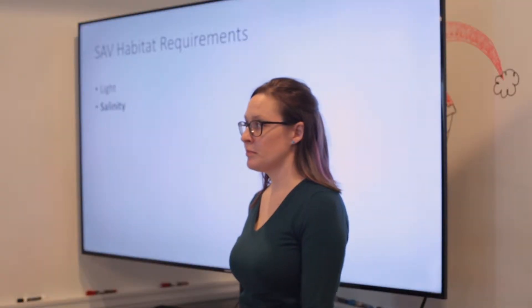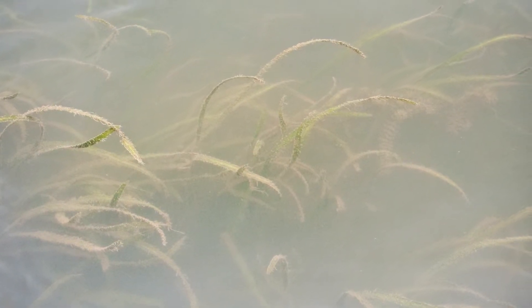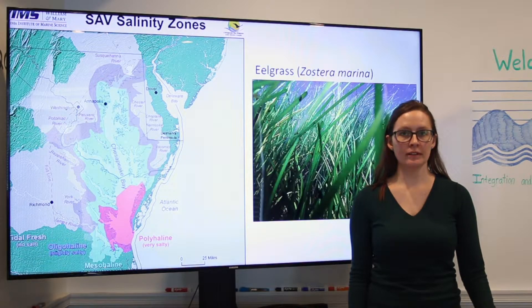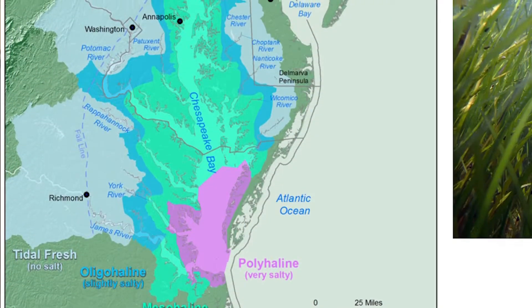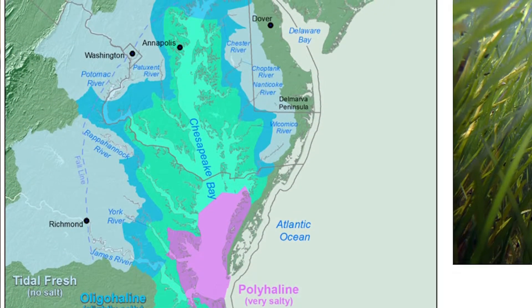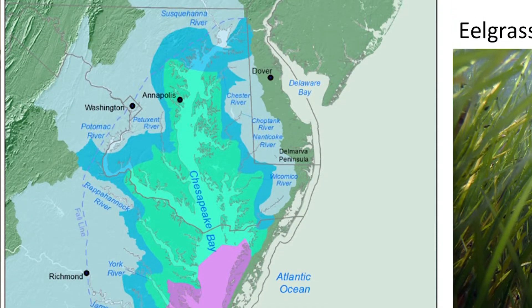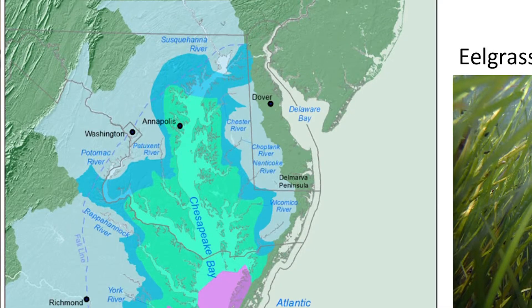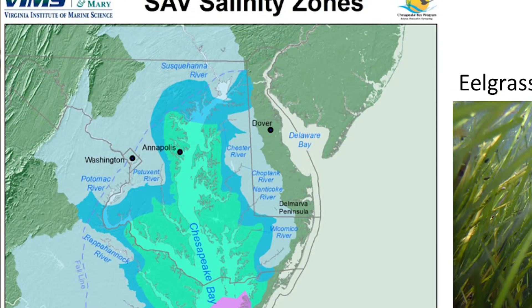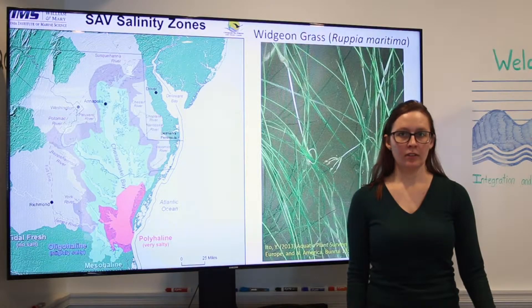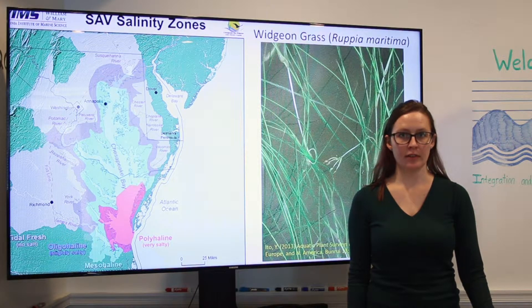Salinity is also extremely important to SAV and influences their distribution, as can be seen in the Chesapeake Bay. For example, only eelgrass and widgeongrass live in the highly saline or polyhaline waters of the lower bay, whereas species that require lower salinity waters live in the oligohaline or mesohaline upper and middle portions of the bay. Widgeongrass has a wide salinity tolerance and can be found throughout the bay.